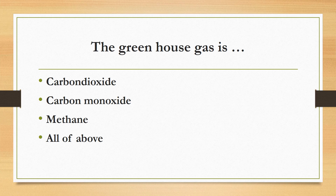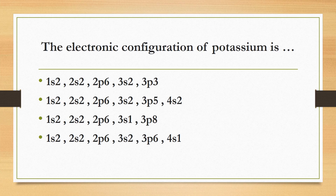The electronic configuration of potassium — the correct answer is option D: 1s², 2s², 2p⁶, 3s², 3p⁶, 4s¹.